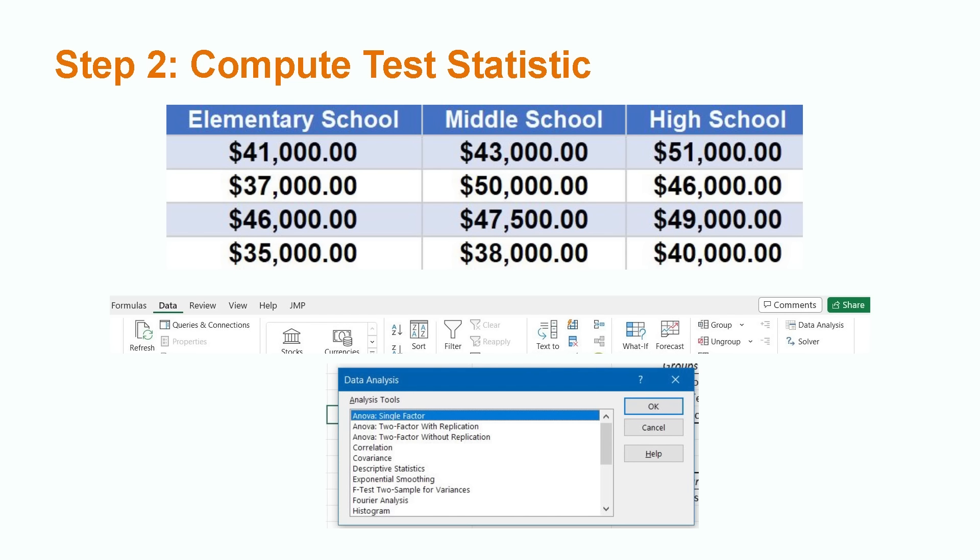We will start by clicking on the Data tab in the Excel ribbon. We will now select Data Analysis. When we do this, we will get a list of several statistical tests. We want to select ANOVA single-factor.